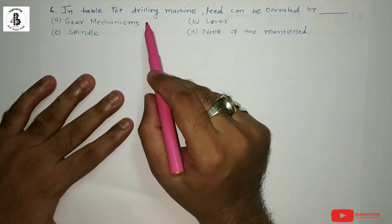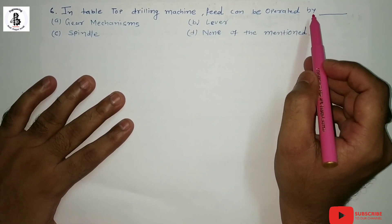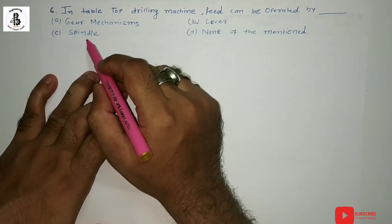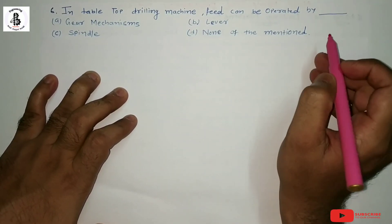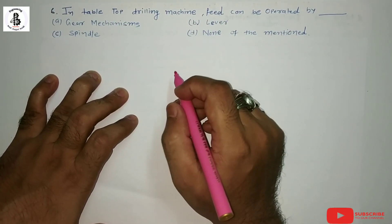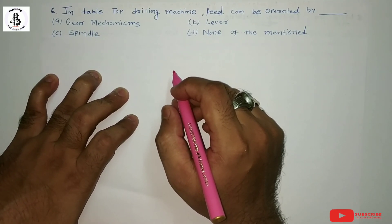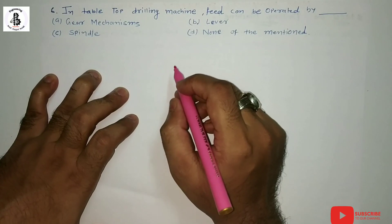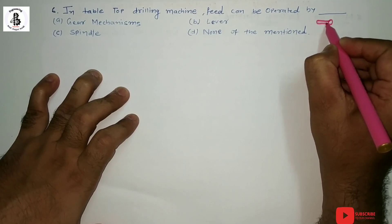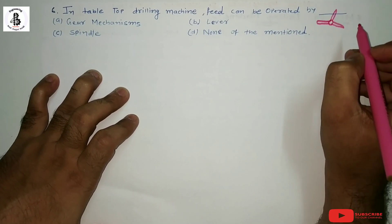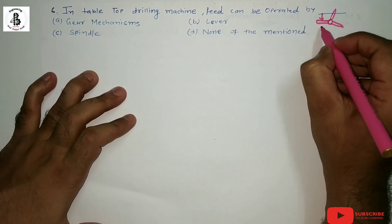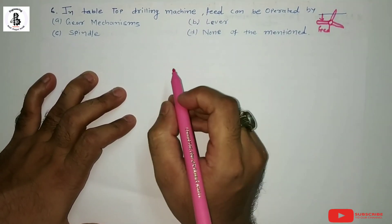In a tabletop drilling machine, feed can be operated by: option A: gear mechanism, option B: lever mechanism, option C: spindle, option D: none of the above. For providing feed during drilling operations, a lever mechanism is used. The lever provides downward movement for drilling operations. You can see such levers on the headstock — applying pressure provides the downward feed for performing drilling operations.